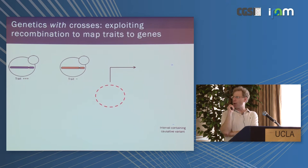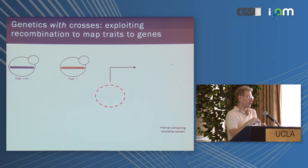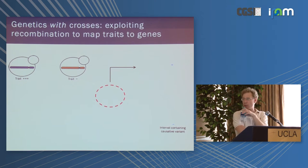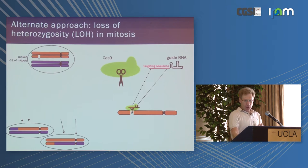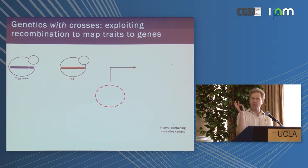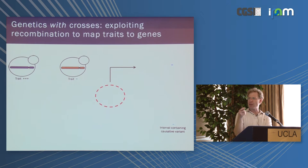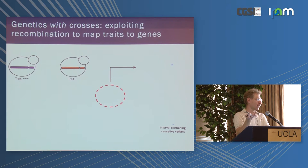I'll talk about a cool new thing we've been doing recently — the first iteration of which was just published a few weeks ago. The idea is quite different and we hope will go well beyond yeast: doing genetic mapping without crosses. I just went through a long example explaining how you can cross two strains and generate a panel of progeny and map genetic differences that way.